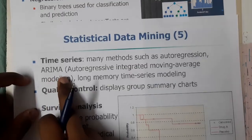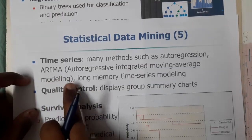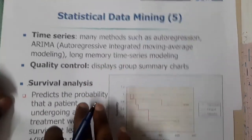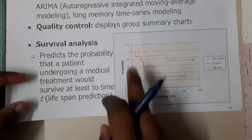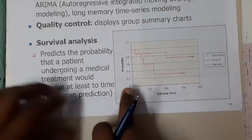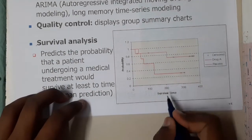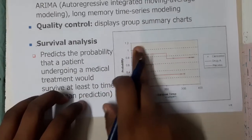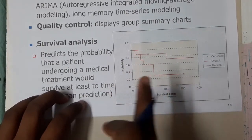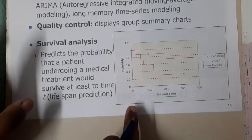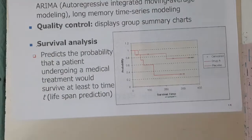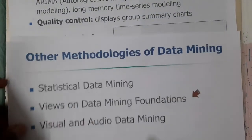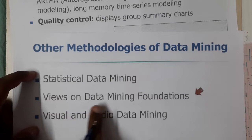Similarly, time series data uses many methods such as autoregression and ARIMA. Time series analysis is essentially where everything happens with respect to time. For example, here survival probability is changing with respect to time. This kind of data is called time series.